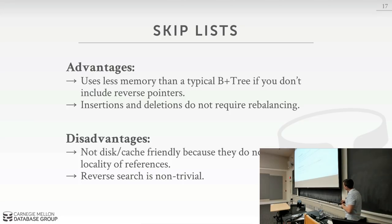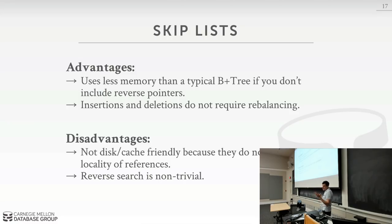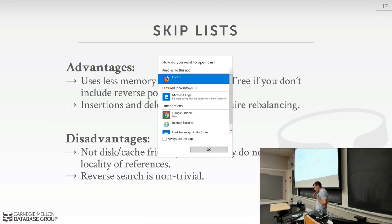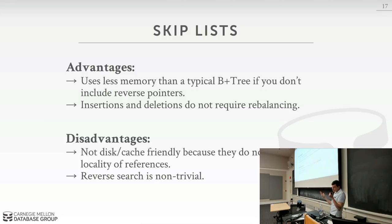The advantages of skip lists are that insertions and deletions do not require any major rebalancing because all changes are localized to just that point of the skip list, unlike B plus trees where you have to recursively do splits and merges. In practice, skip lists could potentially use less memory than a typical B plus tree if you don't use the compression optimizations. However, you only get that memory benefit if you don't include reverse pointers.